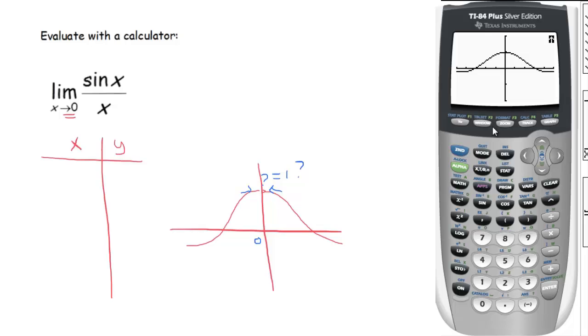To see how the table works, first go to second window to go to your table set. Go to your independent variable. Oftentimes the default mode has both set to auto. Set the independent to ask—that means we're going to choose which values we plug in for x. Then go to your table, and you'll notice it should be blank.